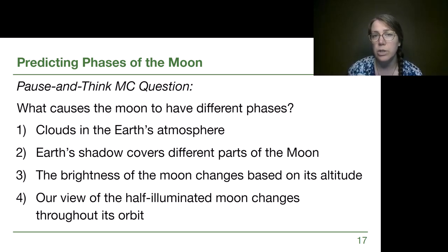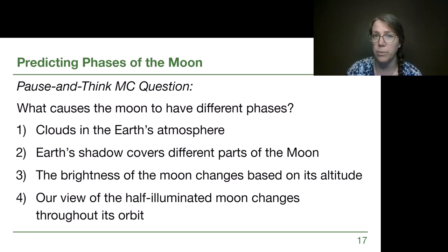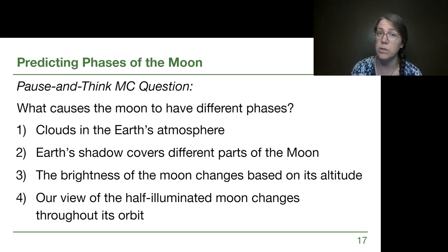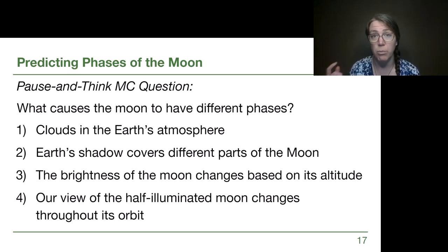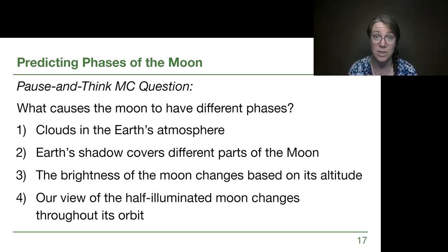Option 2 — Earth's shadow covering different parts of the moon — is what happens during lunar eclipses, which will be the focus of our next video, but it is not the cause of monthly changes to the moon phases. This is a very common misconception and one that we absolutely have to confront and change our own minds about to really understand this topic.